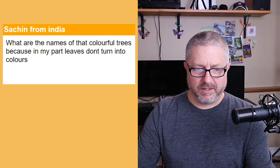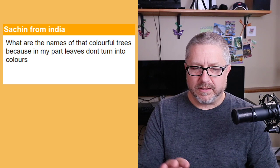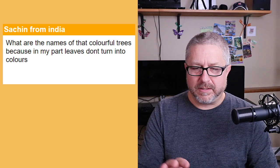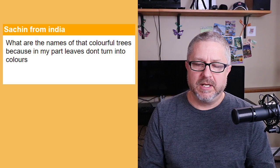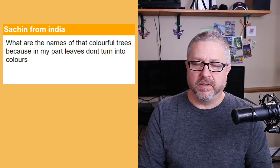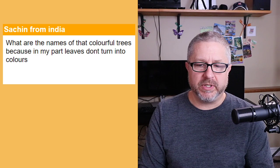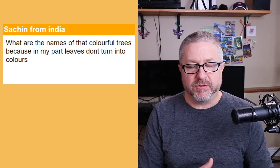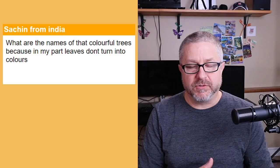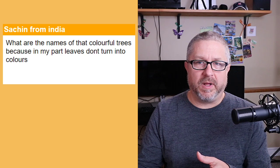Sachin asks: what are the names of the colorful trees, because in his part leaves don't turn color? The trees where the leaves turn color are basically all the deciduous trees. Pine trees and spruce trees do not turn color — they stay green all year, which is why they're called evergreens. Spruce, pine, cedar all stay green. But maple trees, oak trees, poplar trees, birch trees — all the trees with big flat leaves do turn color and the leaves will fall off. Usually the leaves fall off when we have a storm with rain and strong wind.